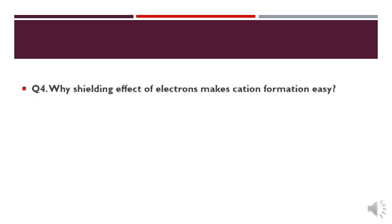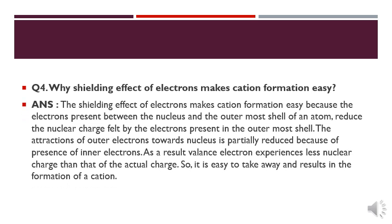Question number 4: why does the shielding effect of electrons make cation formation easy? Because of the presence of electrons between the nucleus and the outermost shell, the nuclear charge felt by the outermost shell is reduced. That is why the attraction towards the nucleus is partially reduced due to the presence of inner electrons. So we can pull an electron easily away from an atom and form a cation.